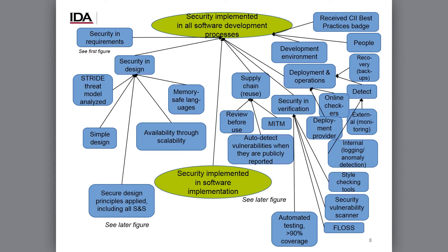A key claim is that security is implemented in all our software development processes. We consider security in requirements, design, implementation, our supply chain — in other words the software we reuse — verification including our testing, deployment and operations, our development environment, and our people. To justify that we've considered these, we have in fact received the CII Best Practices badge ourselves.